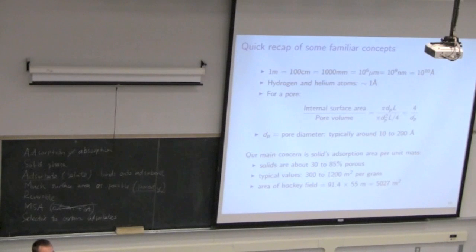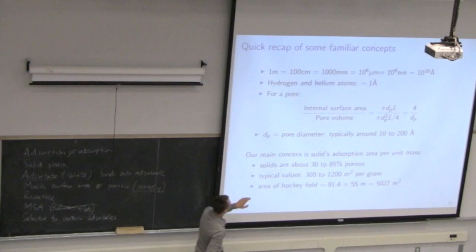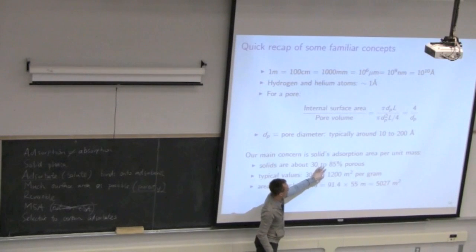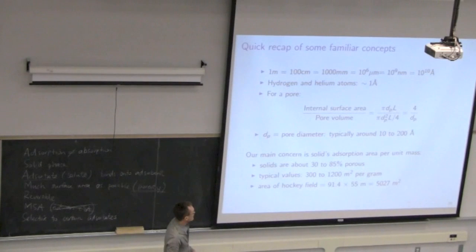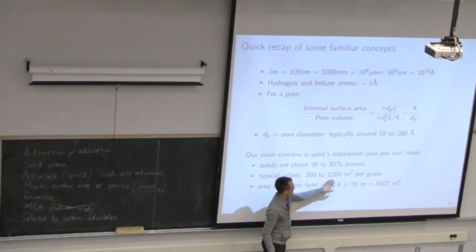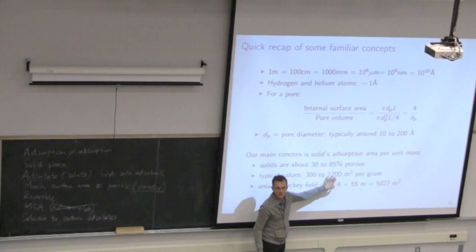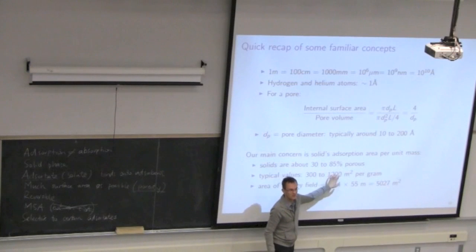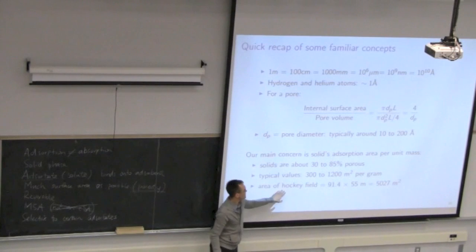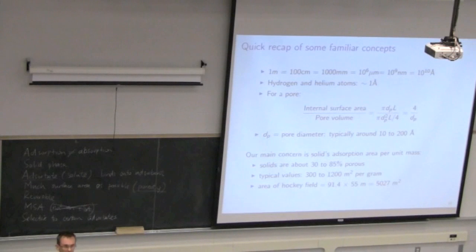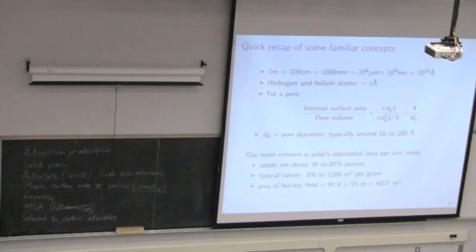Our other concern is how much area is available. Typically these solids are between 30 to 85% open space, and the typical surface area is between 300 to 1,200 meters squared per gram — that's phenomenal surface area. If a hockey field is about 5,000 m², then just 4 grams of highly adsorbing material would have that equivalent area.